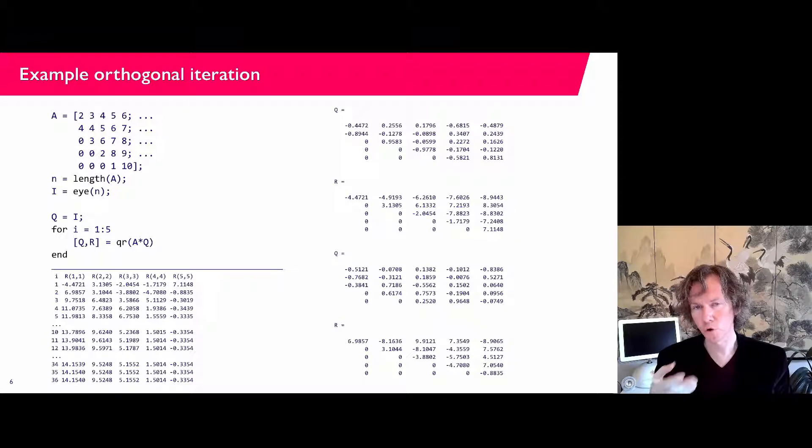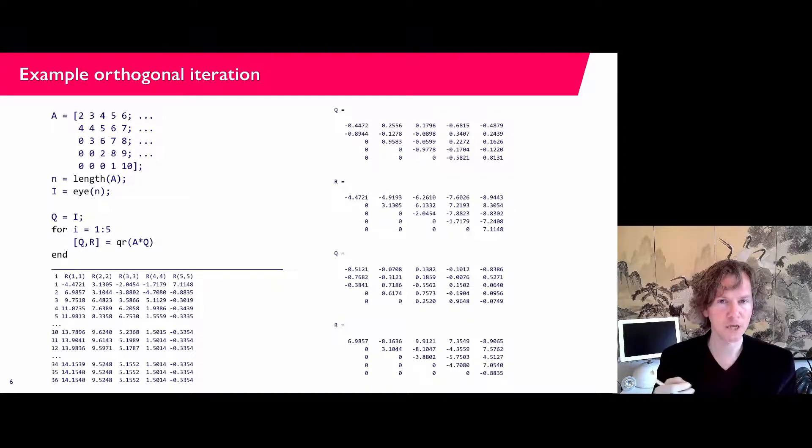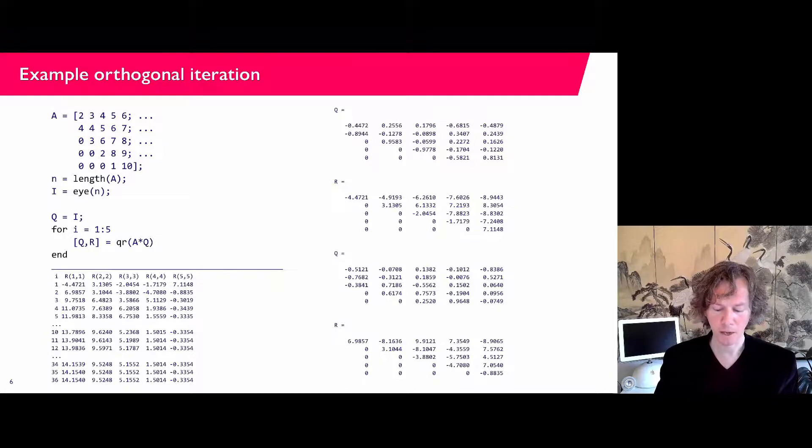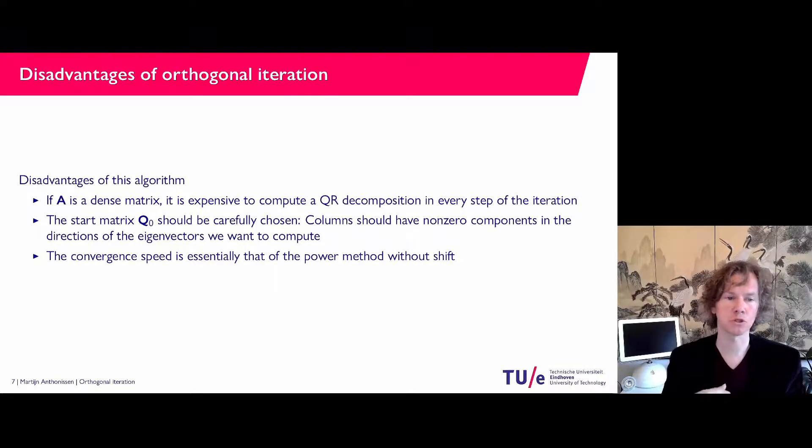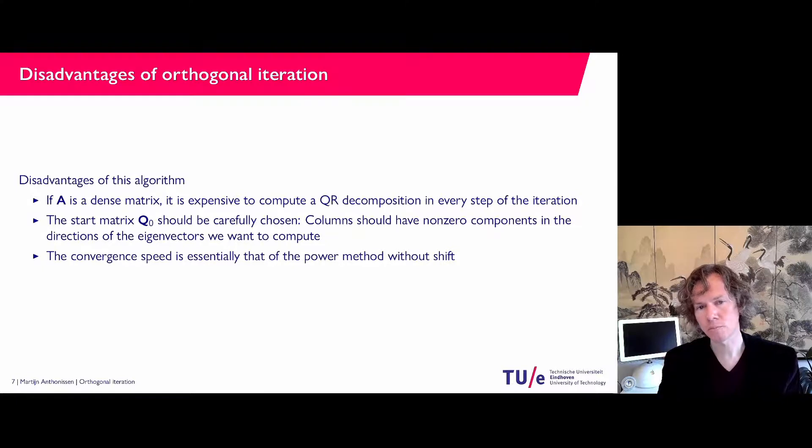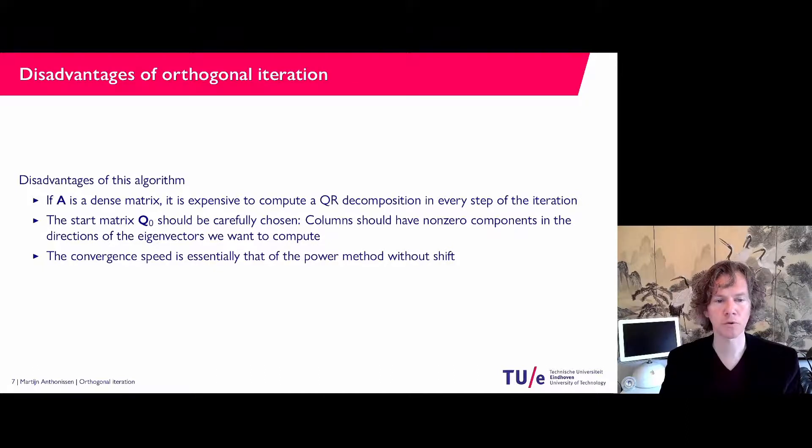Now this works here but it's not perfect yet. So we still want to change the algorithm and there are a couple of reasons for that. Disadvantages are that if your matrix is dense, then it is quite expensive to compute the QR decomposition in every iteration step. Also the starting matrix should be carefully chosen in the sense that all of the columns should have non-zero components in the directions of the eigenvectors you would like to compute. And finally the convergence speed is essentially that of the power method without shift, so that is not very fast yet. So there is plenty of opportunity here to make this method better.